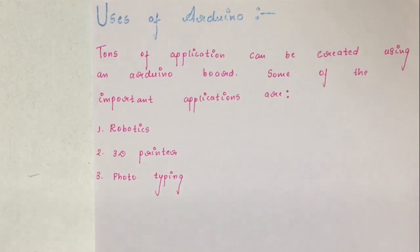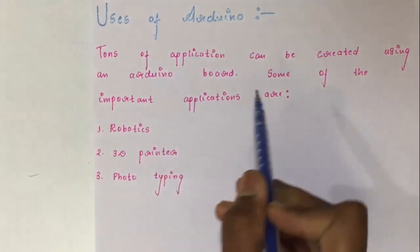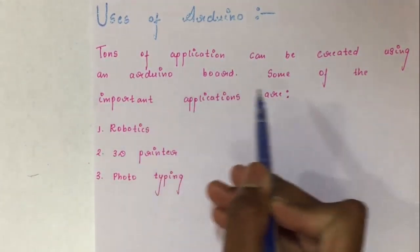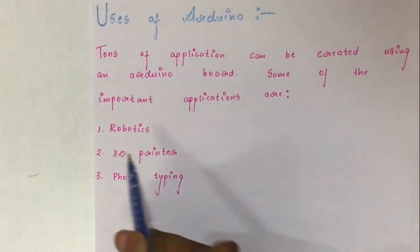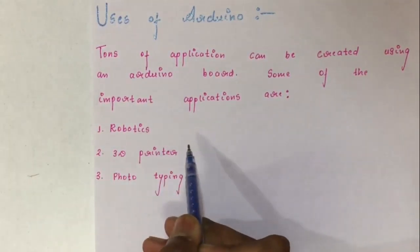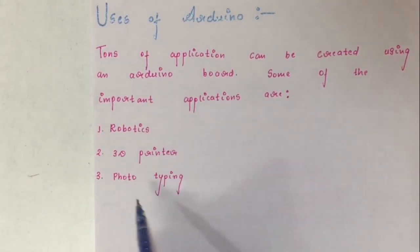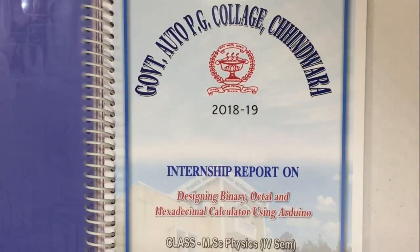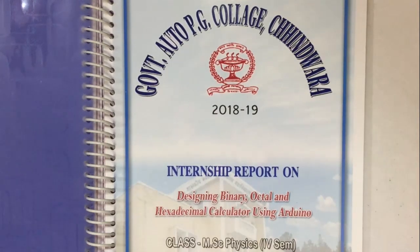Now we have successfully talked about the features of the Arduino Uno. Tons of applications can be created using an Arduino board. Some of the important applications are in robotics, 3D printing and prototyping. We have already talked about the microcontroller Arduino Uno, its pin description, technical specification, main features and its uses.